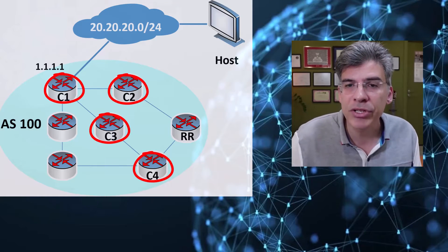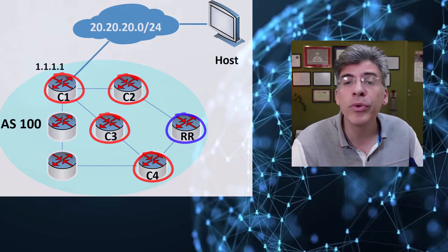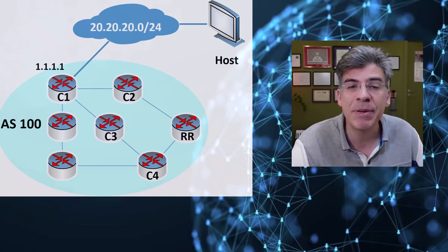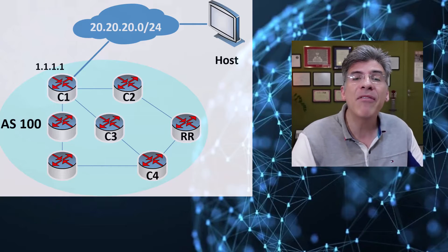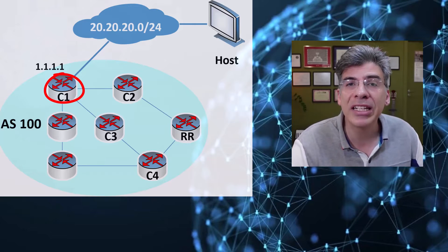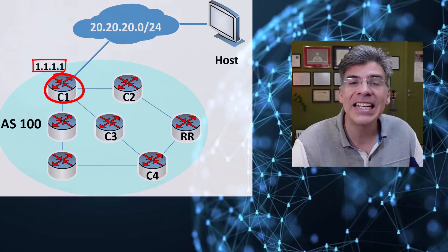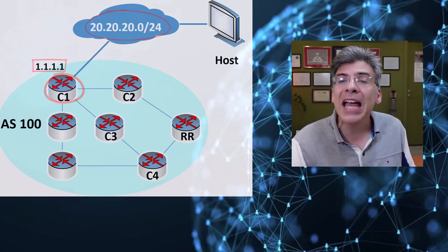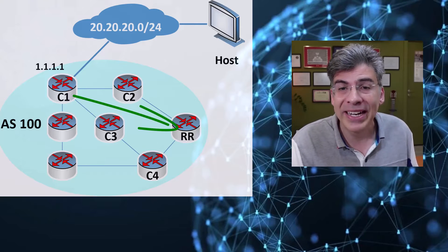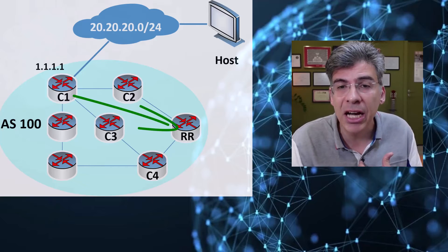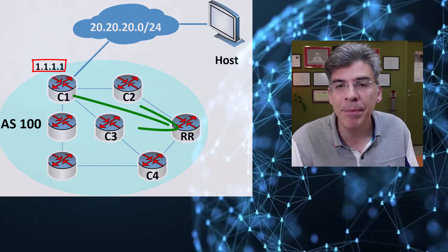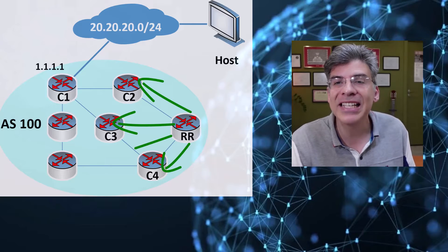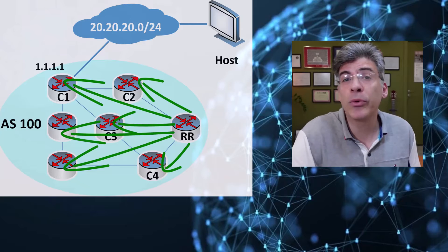In order to understand what this attribute actually does, let's take a look at a practical example. Here we have four client routers and a single route reflector. Remember, within an AS, all routers should be able to reach all other routers using an IGP, and this is a prerequisite of ensuring that BGP will function correctly within the AS. Here we have client router C1, which has a router ID of 1.1.1.1, and it has a network that's directly connected — that's the 20.20.20.0/24 network. C1 will advertise this network to the route reflector. The route reflector, in turn, will advertise this network to its IBGP neighbors, because that's what a route reflector does.